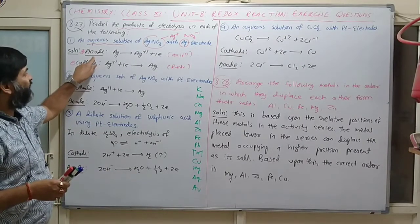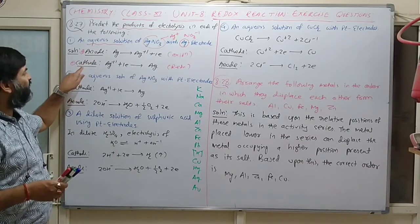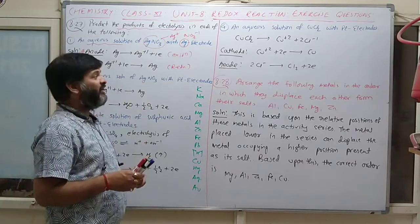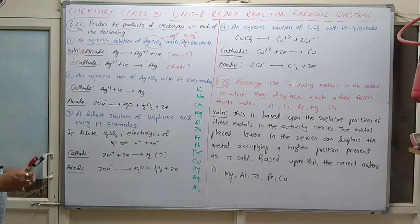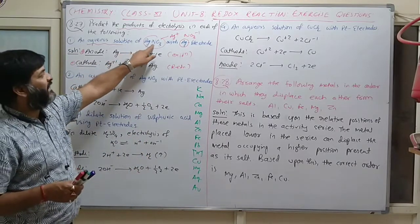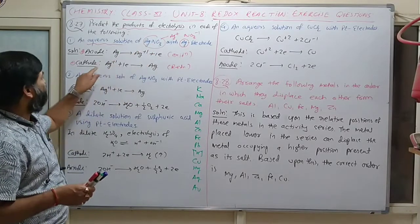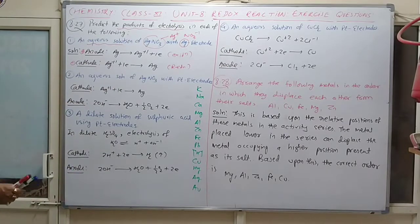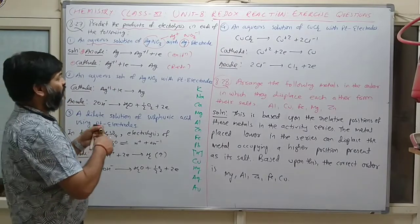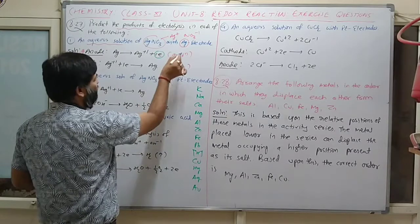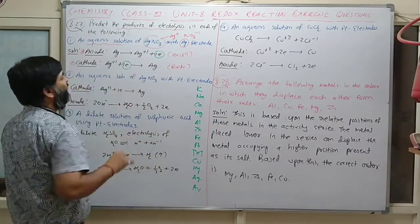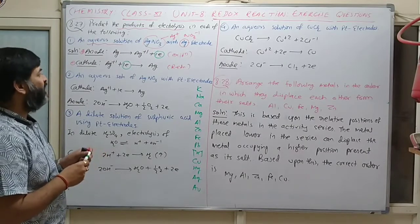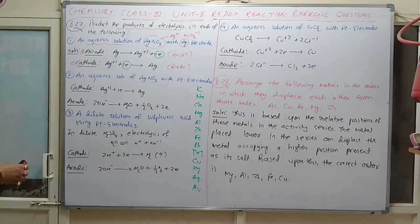The anode is associated with positive charge and the cathode with negative charge. When silver ions from the solution are attracted toward the cathode, reduction occurs. The electron is on the right-hand side indicating oxidation on the left-hand side. This completes the information for question 1.